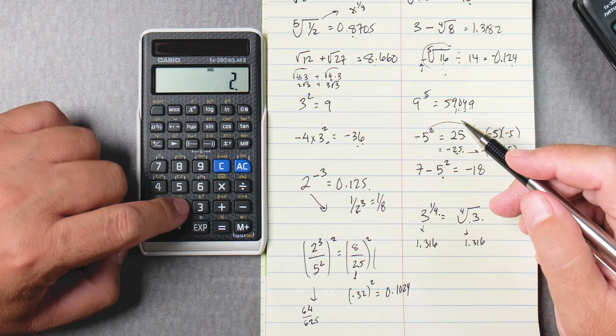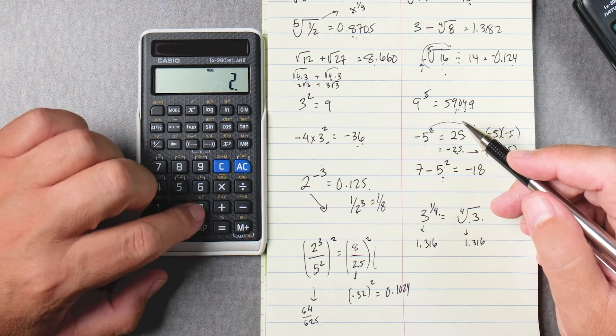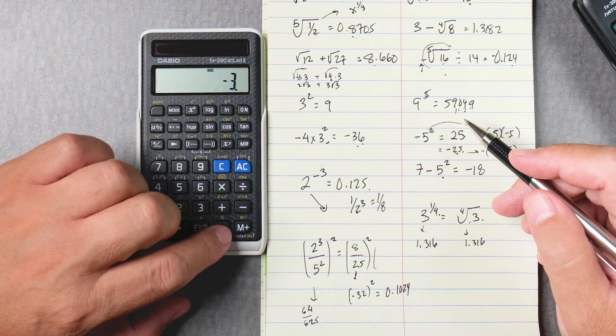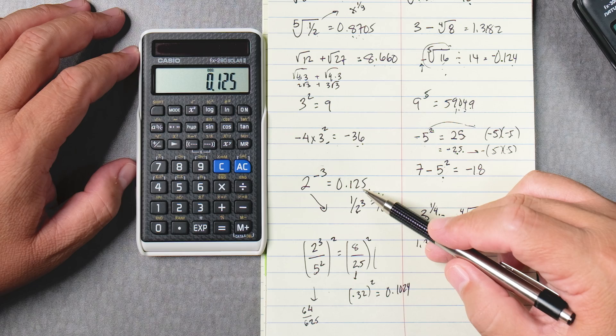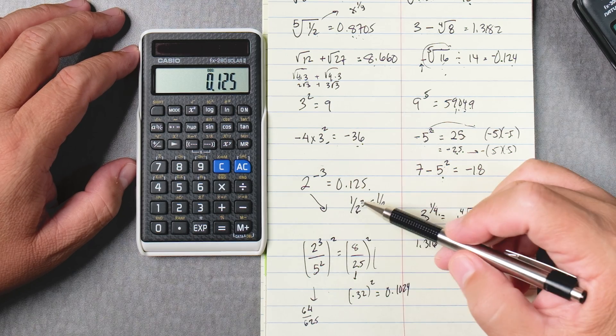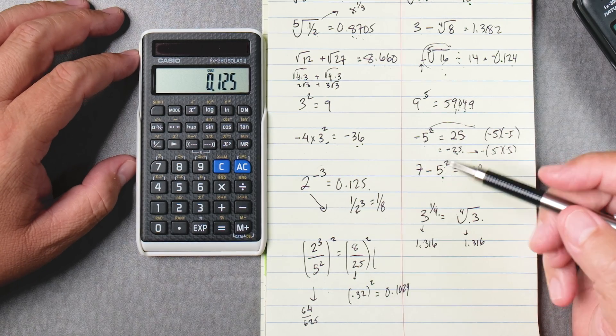So two right to the power of three negative equals equals and that's going to give you 0.125. Okay some calculators will give you the fraction form.